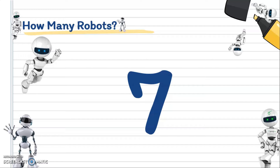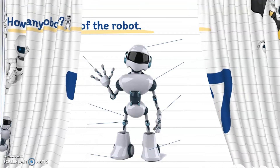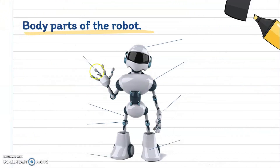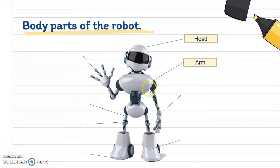Great! Now we will start with the upper part of the body, which is the head. Repeat after me: Head. Then we move on to the upper body, which is the arm. Repeat after me: Arm. Very good! The upper part here is the arm. Next, we have hand.